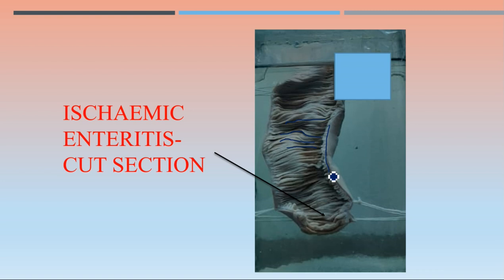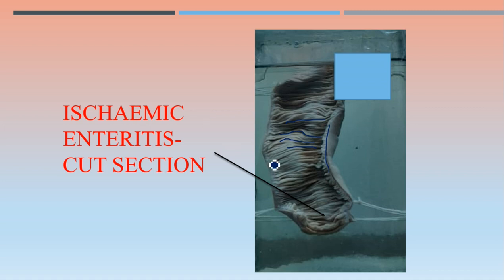The diagnosis shown here is ischemic enteritis. At the arrowhead, a stenosis or stricture segment is present. This type of condition can be seen in various GI diseases like Crohn's disease. The possible diagnosis relates to all causes of ischemic enteritis - enteritis means inflammation of the small intestine, and ischemic means reduced vascular supply.